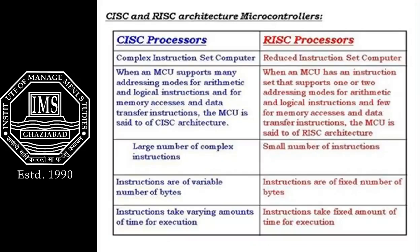When a microcontroller unit (MCU) supports many addressing modes — more than one — for arithmetic, logical instructions, memory access, and data transfer, it is CISC. When the MCU supports only one or two addressing modes for arithmetic and logical instructions, and few for memory access and data transfer, the microcontroller unit is said to be of RISC architecture type.